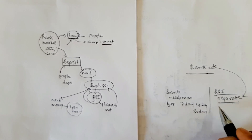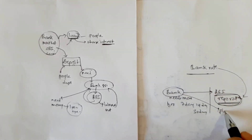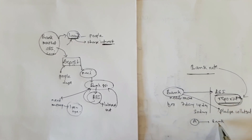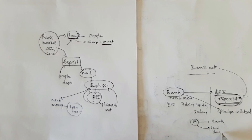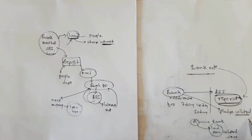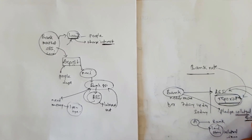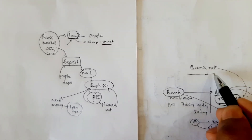Another difference: when getting a loan from RBI under the repo rate, the bank needs to pledge collateral. For example, just like a person going to a bank pledges land records, a house, or vehicles as security, the bank pledges government securities as collateral with the RBI to get a loan under the repo rate.